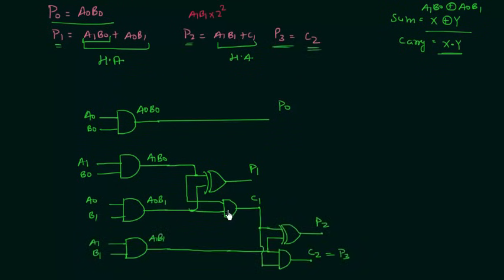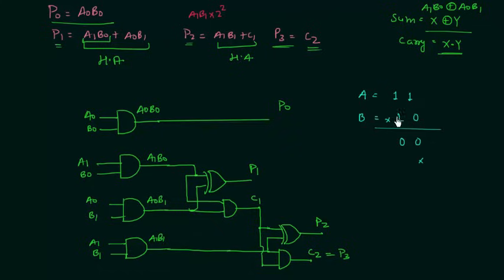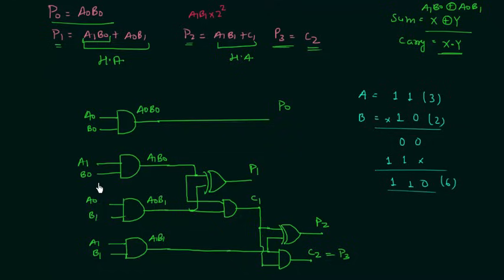This completes the 2-bit multiplier circuit. Let's verify with an example: A = 11 (binary) and B = 10 (binary), i.e., 3 × 2. Multiplying: 0×1=0, 0×1=0, 1×1=1, 1×1=1, giving the result 0110, which is 6. That is correct. Now let's verify using the circuit.